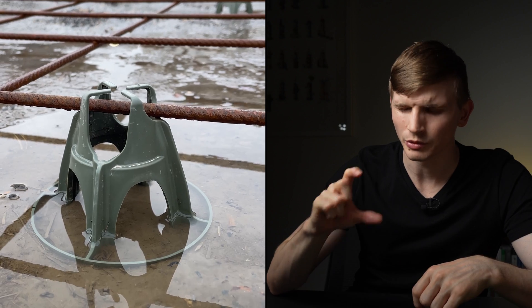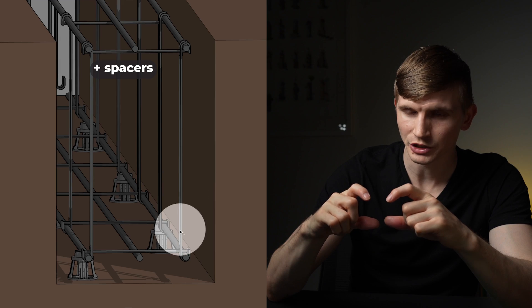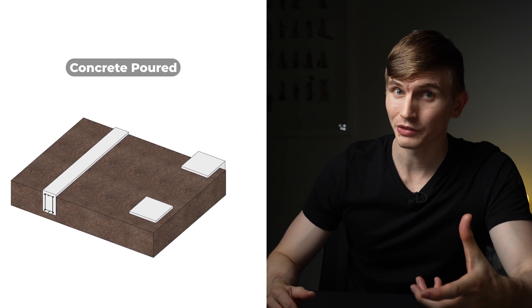The steel reinforcement is placed using bar chairs to hold the reinforcement to the height that the engineers have specified. Spacers are used to hold the trench mesh apart and in place. After this the concrete is poured.